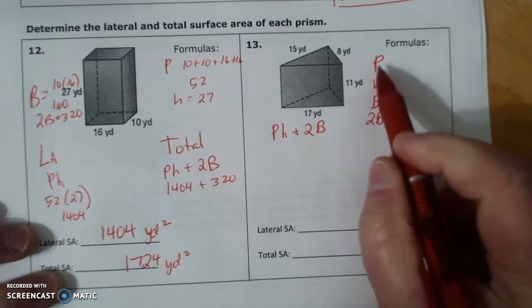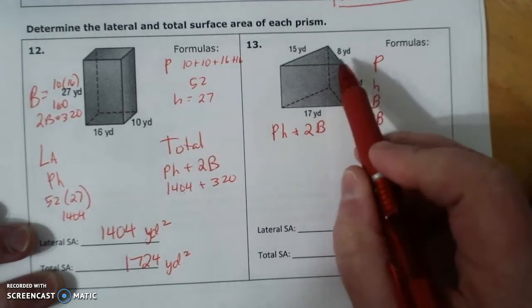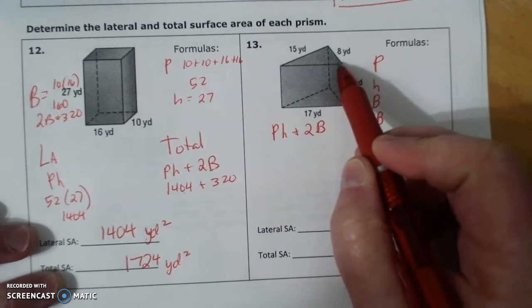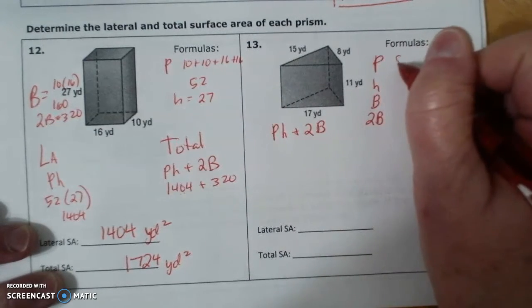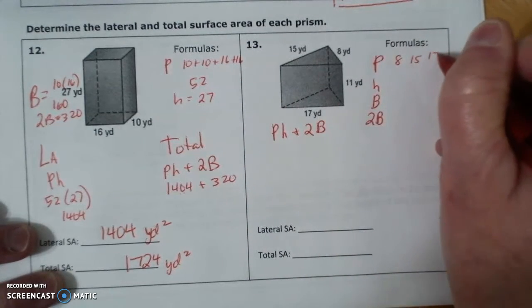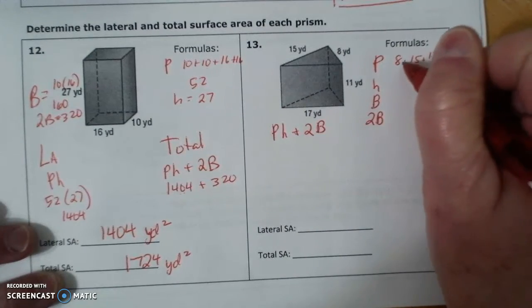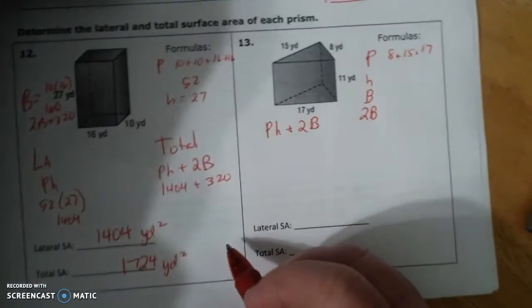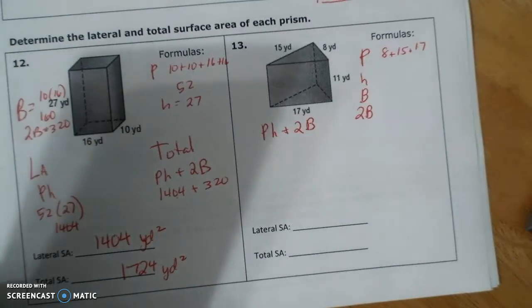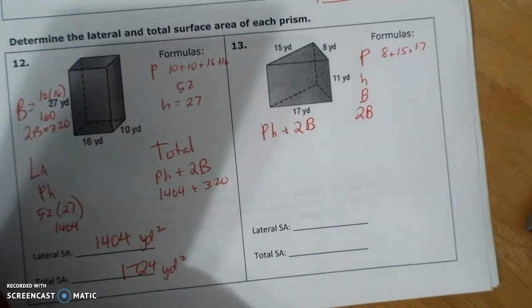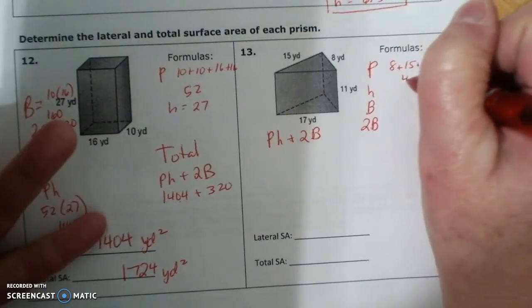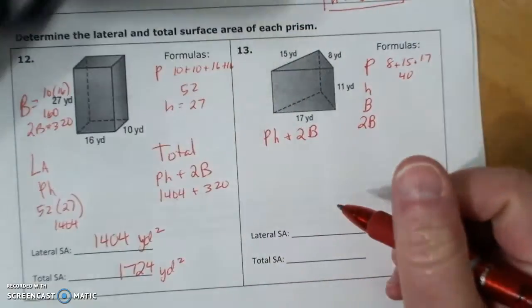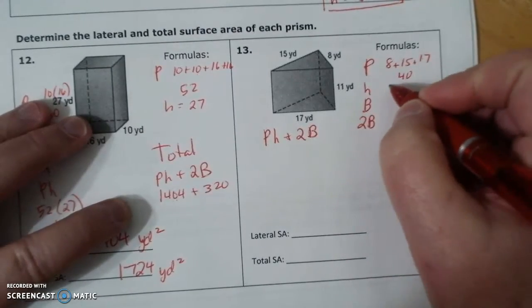P: 8, 15, and 17. 8 plus 15 plus 17 is 40. And then h is 11.